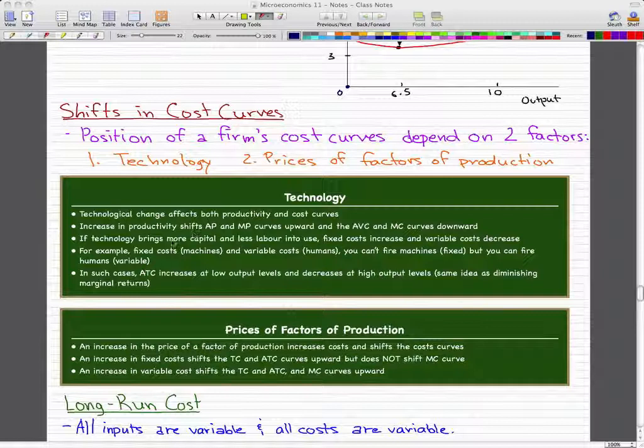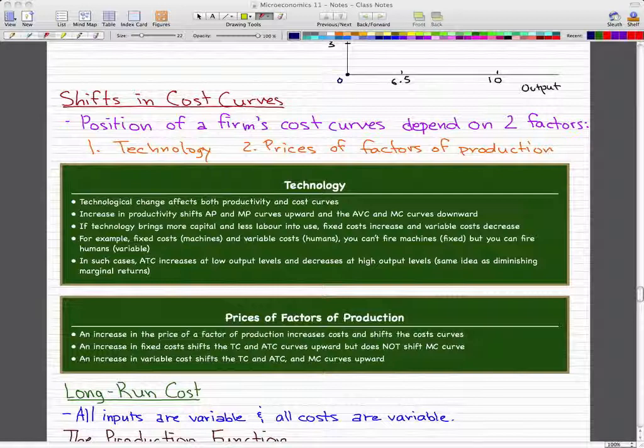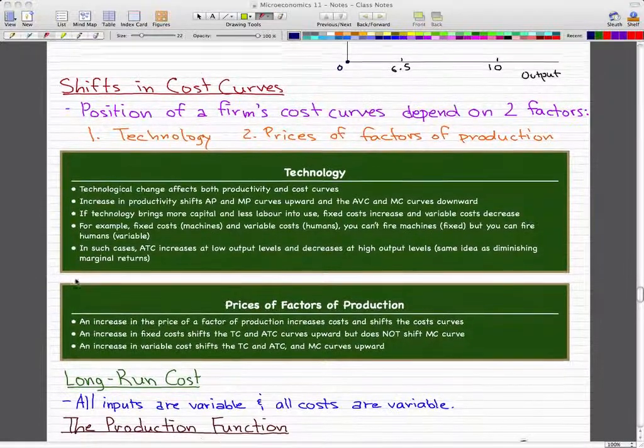When we have fixed cost machines and variable cost humans, you can't fire machines which are fixed costs, but you can fire humans which are variable costs. This is representative of the idea of diminishing marginal returns.